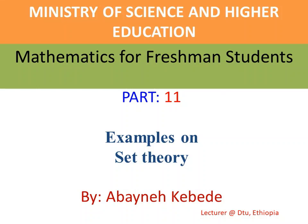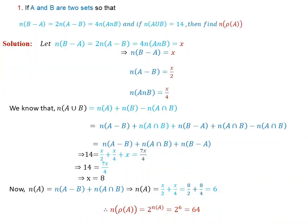Welcome to this YouTube channel. This is Mathematics for Freshman Students, Part 11. Part 11 covers set theory examples. Example number 1: Given two sets A and B, the number of B without A is 2 times the number of A without B, which equals 4 times the number of A intersection B. If the number of A union B equals 14, find the number of power set of A.